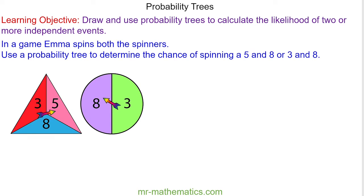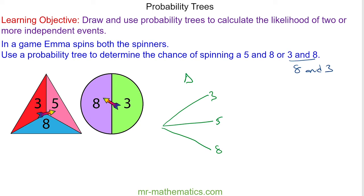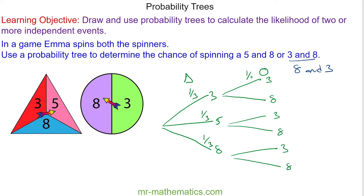For our final question, in a game Emma spins both spinners. Use a probability tree to determine the chance of spinning a five and an eight, or a three and an eight — and this could also be an eight and a three. The probability tree begins with a triangular spinner: we can have three outcomes — a three, a five, and an eight — each equally likely. On the circular spinner you can have two outcomes, a three and an eight, and these are independent of the first spinner, each with probability one half.